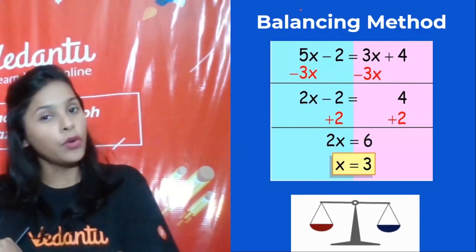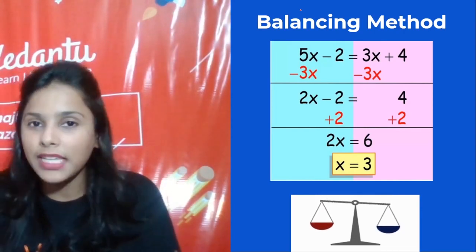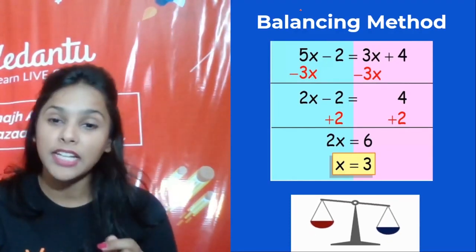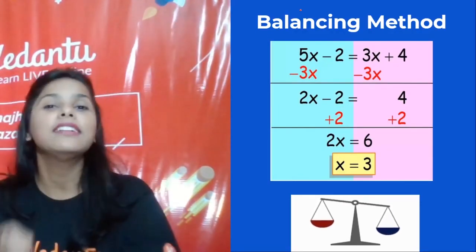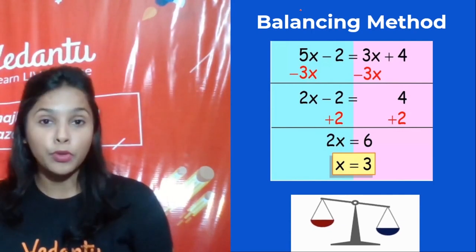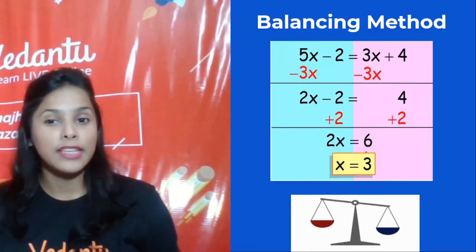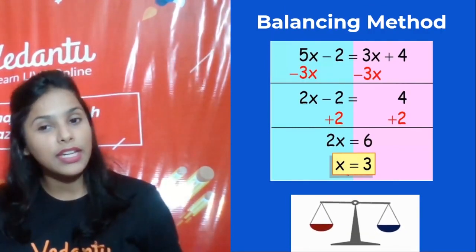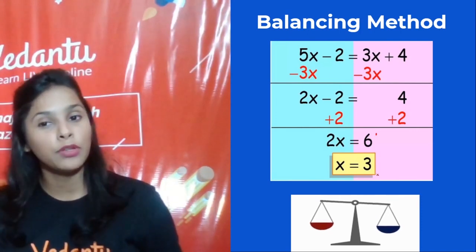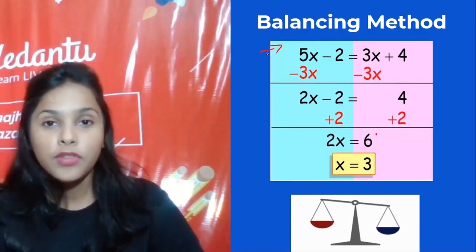That gives us 2x − 2 = 4. Now we eliminate −2 from the LHS by adding 2 to both sides: 2x − 2 + 2 = 2x, and 4 + 2 = 6. So 2x = 6, and dividing both sides by 2 gives x = 3.